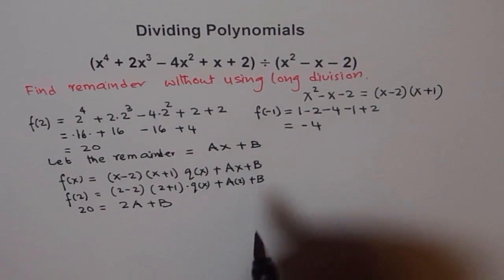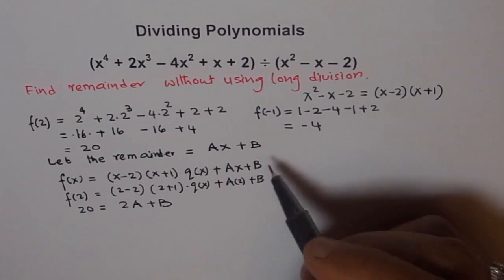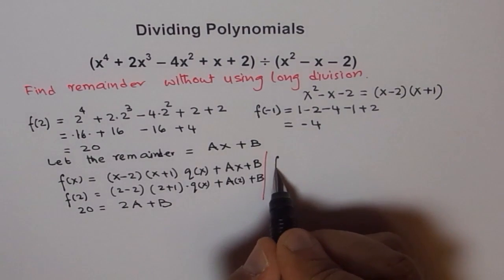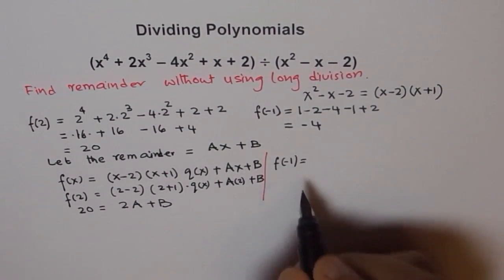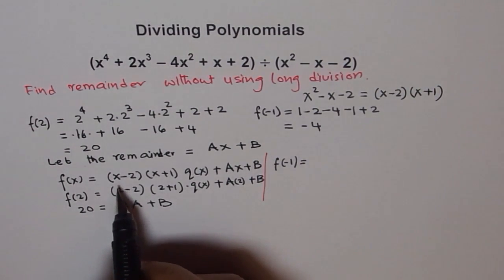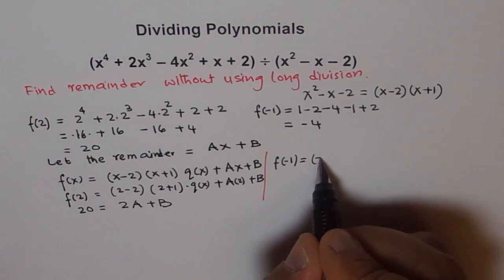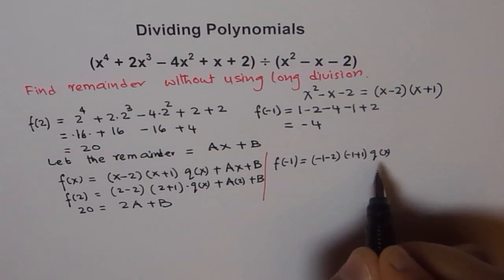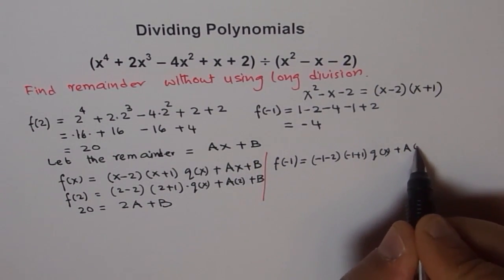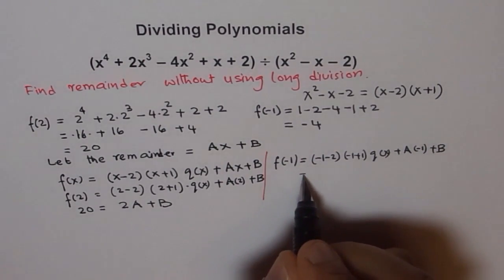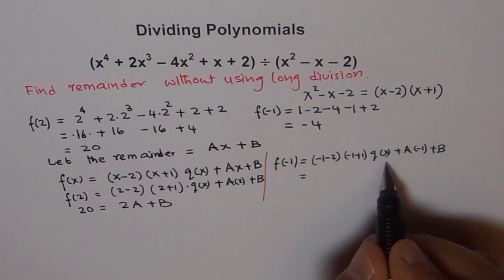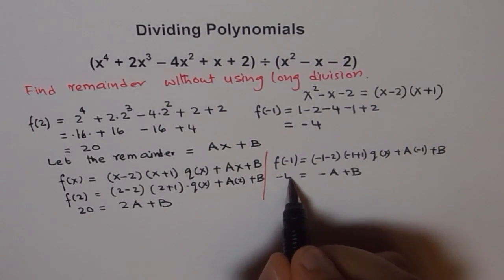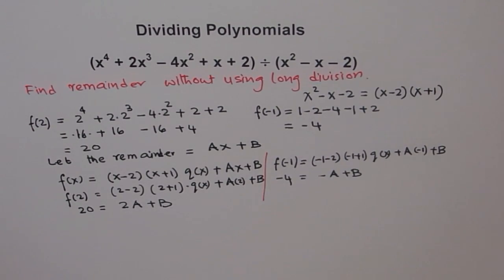Now, let's also find f(-1). So, f(-1) is -4. So we say, f(-1) equals to, so we'll put -1 here. -1 - 2 times -1 + 1 times q(x) plus A times -1 + B. Now, -1 + 1 is 0, so the first term is 0. You are left with -A + B and what is f(-1), -4. You see?